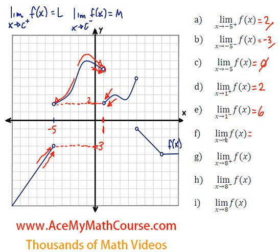So what is the limit as x approaches 1 of f of x? Well, the limit coming from the right and the limit coming from the left are different — they're 2 and 6 — so this will also not exist.